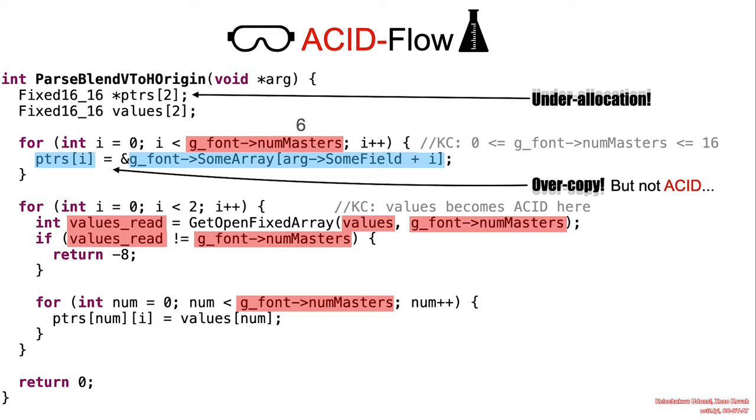However, the values array, as with the pointers array, is a fixed-sized buffer able to contain two elements, but numMasters is variable from zero to 16.